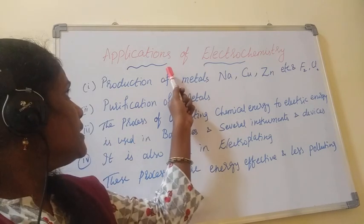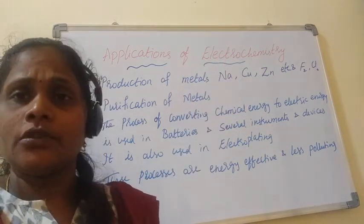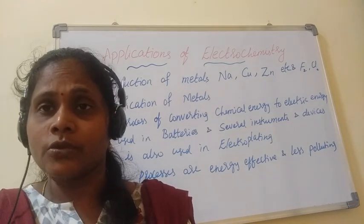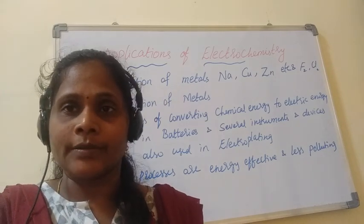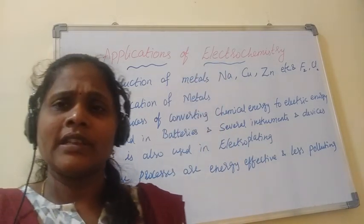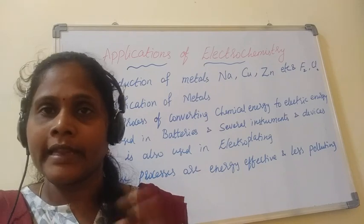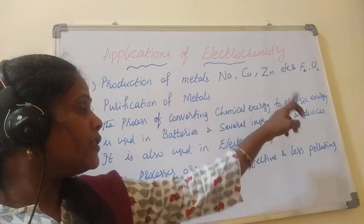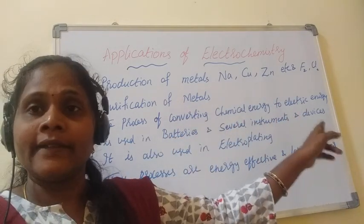The next topic is the applications of this chapter. If we know the applications and how something is used, it becomes more interesting to understand. The first application: the process of converting chemical energy to electrical energy is used in batteries and several instruments and devices.